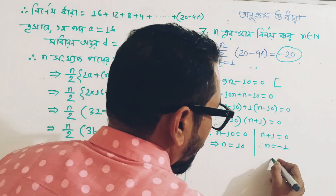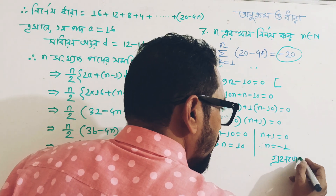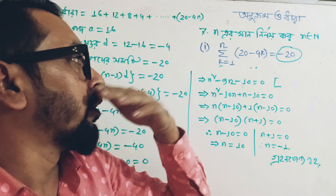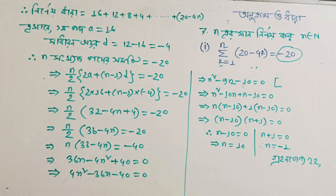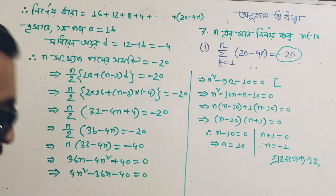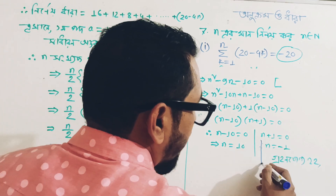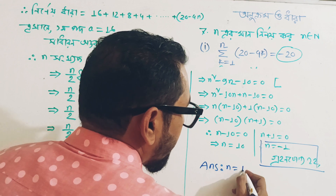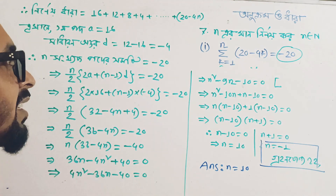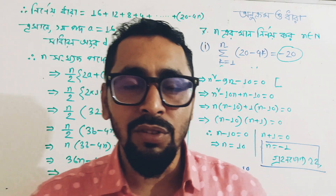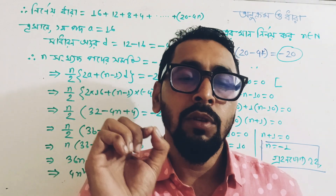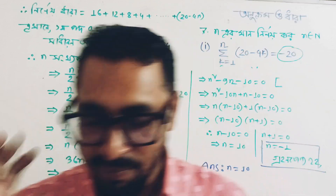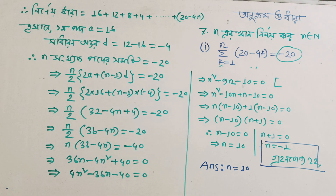Since n cannot be negative, we take n equals 10 as the valid answer. This concludes the solution for this particular class.